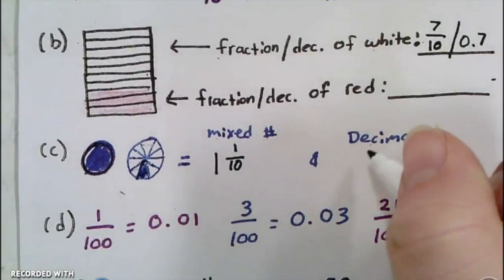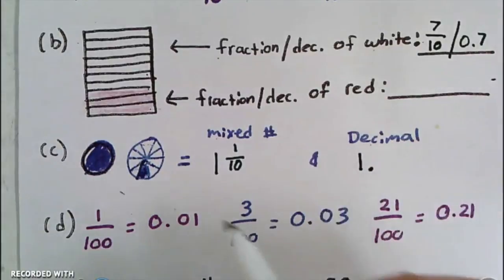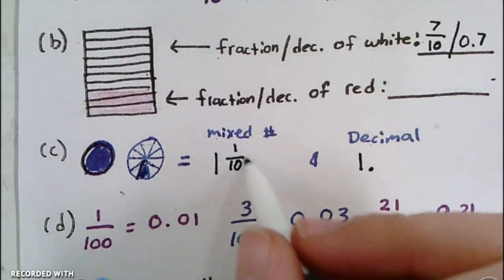I would write that as a decimal by writing the 1 as my whole number and then the numerator in the tenths spot, so it would be 1.1. Isn't this fun and kind of easy? Looking at example D, now we're going